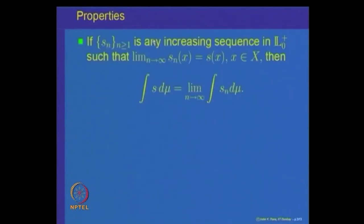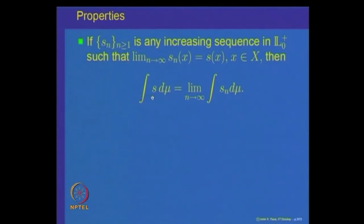If you recall, the last property we proved in the previous lecture was: if S_n is any increasing sequence of non-negative measurable functions converging to a non-negative simple function S(x), then the integral of S equals the limit of integral of S_n dμ. That means, under increasing limits, if the limit is again a non-negative simple measurable function, you can interchange integration and limits.